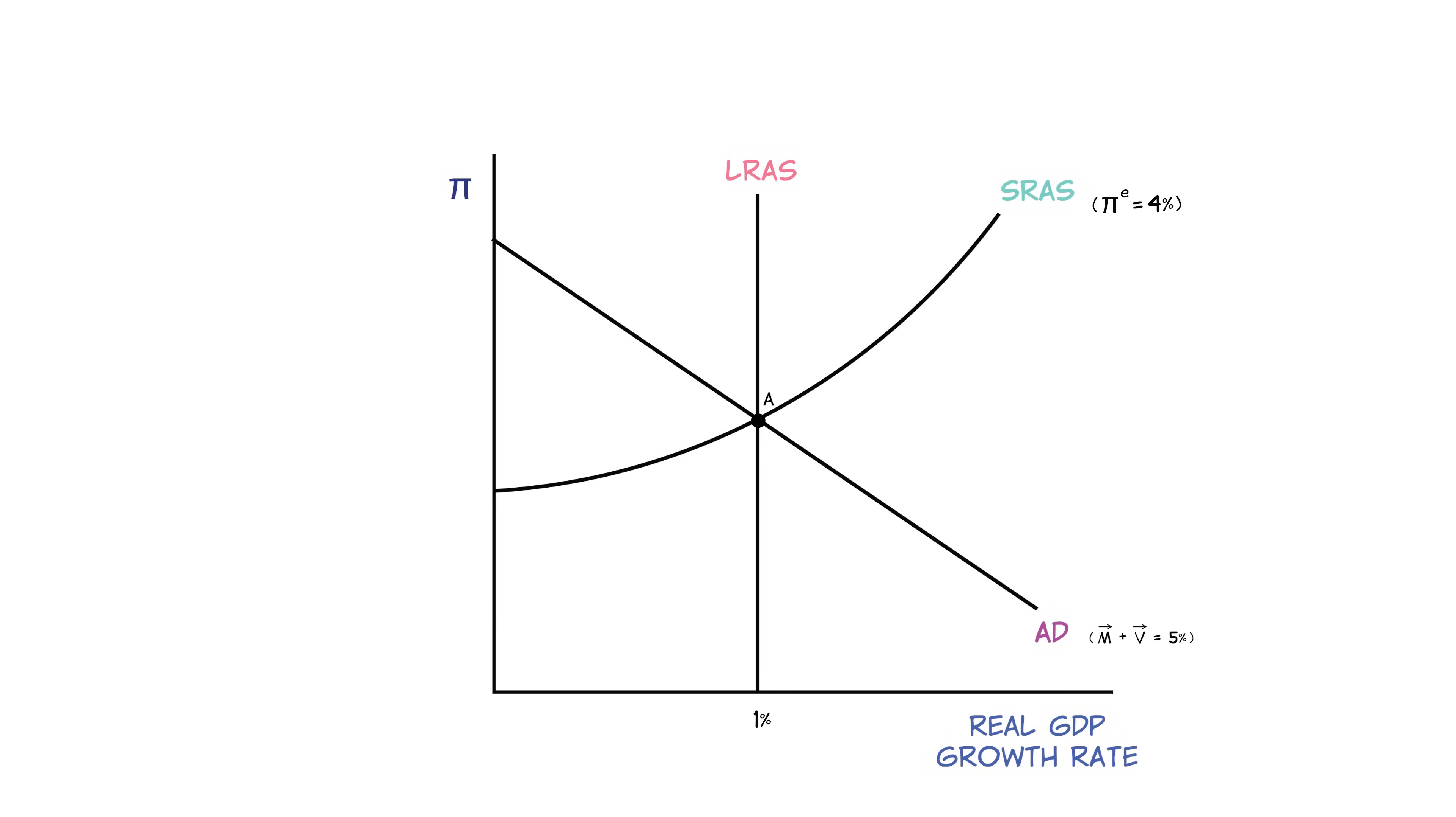Suppose that the government slows down the growth rate of the money supply such that AD shifts to the left like this. The fundamental factors of production haven't changed. So in the long run, we'll move to point C. But notice that at point C, the inflation rate is lower than at point A. Unfortunately, it's difficult for the economy to move from A to C without reducing real growth in the short run. Why is that?